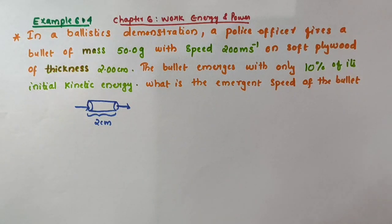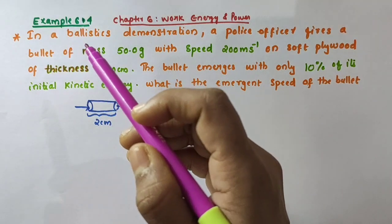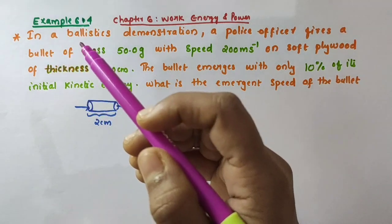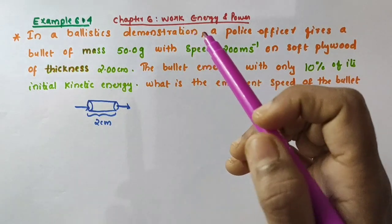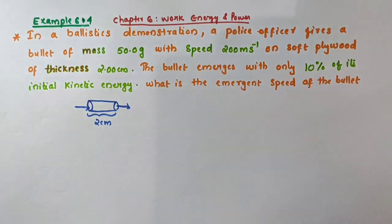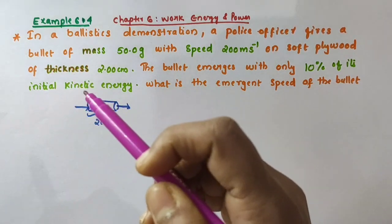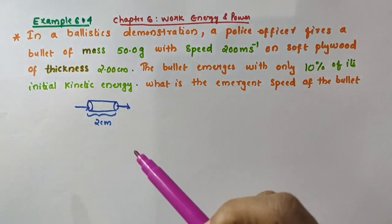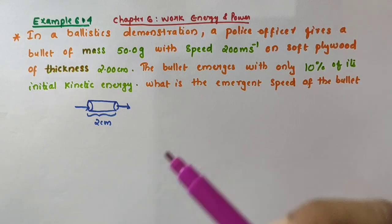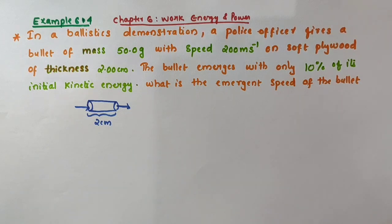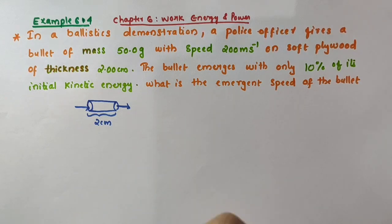Hello everyone. In this video we are going to discuss example 6.4 from chapter 6 'Work, Energy and Power' of class 11 physics. This example is based on the concept of kinetic energy which we have discussed in our previous video. I will provide the link for that in the description box.